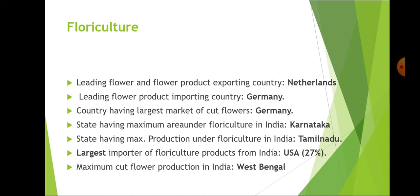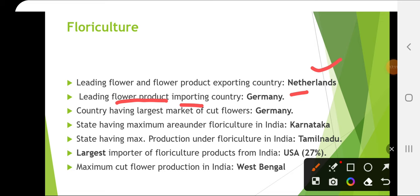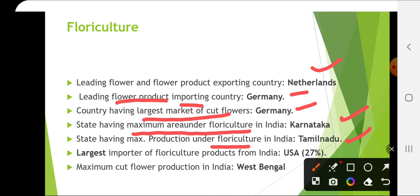Now covering the floriculture portion. The leading flower and flower product exporting country is Netherlands. The leading flower product importing country is Germany, which also has the largest market for cut flowers. Maximum area under floriculture in India is in Karnataka, and state with maximum production is Tamil Nadu. The largest importer of floriculture products from India is the USA, and maximum cut flower production in India is from West Bengal.